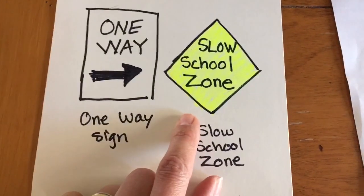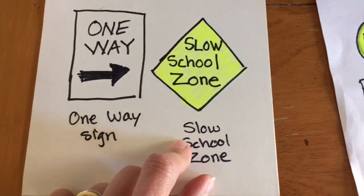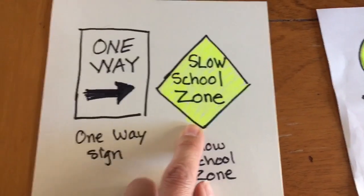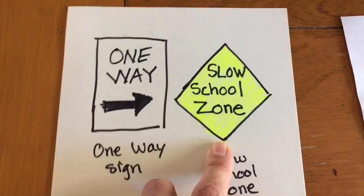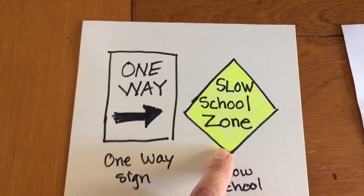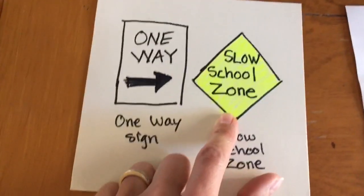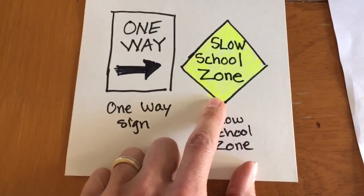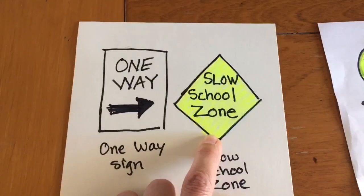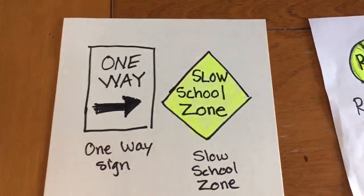School zone — slow down. You must slow down when entering a school zone if children are present. Fines are doubled if you are caught speeding in a school zone.